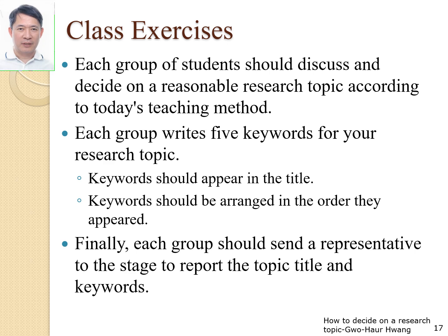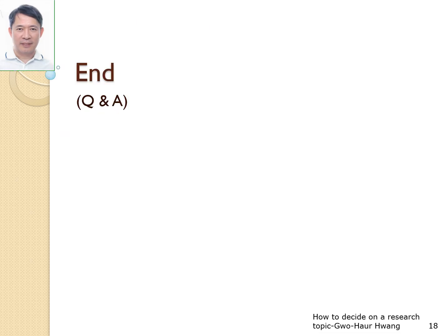Each group of students should discuss and decide on a reasonable research topic according to today's teaching method. Each group writes five keywords for your research topic — keywords should appear in the title and be arranged in the order they appeared. Finally, each group should send a representative to the stage to report the topic title and keywords. This is the introduction to the second unit. If you have any questions, please ask and discuss them with me. Goodbye.